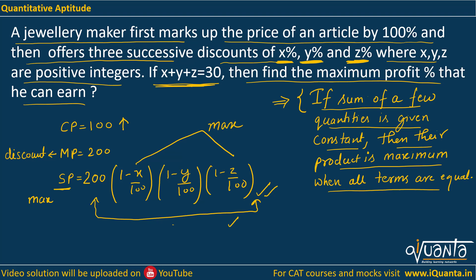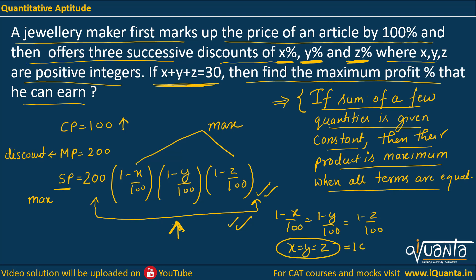Similarly, the product of the three discount factors will be maximum when all are equal, i.e., (1 − x/100) = (1 − y/100) = (1 − z/100), which happens only when x = y = z = 10. We put x = y = z = 10, giving SP = 200 × (1 − 10/100)³ = 200 × 0.9 × 0.9 × 0.9, so SP = 145.8.